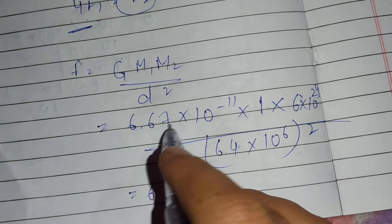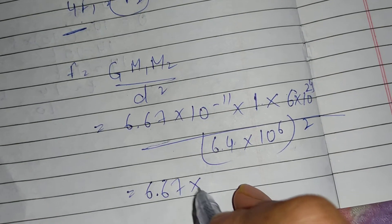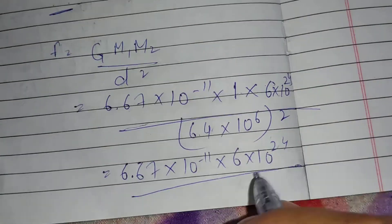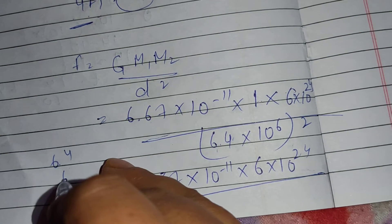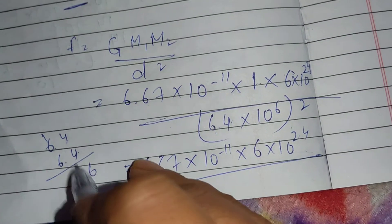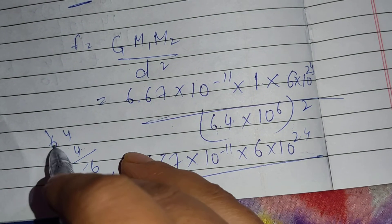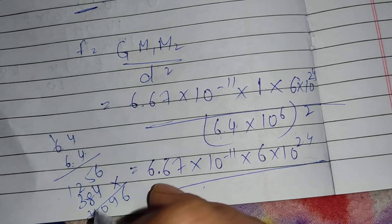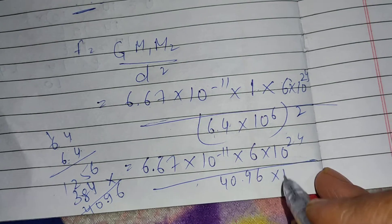Now we will solve this. It is 6.67 into 10 to the power minus 11, multiplied by 6 into 10 to the power 24, divided by 6.4 into 10 to the power 6 squared. The denominator becomes 40.96 into 10 to the power 12.